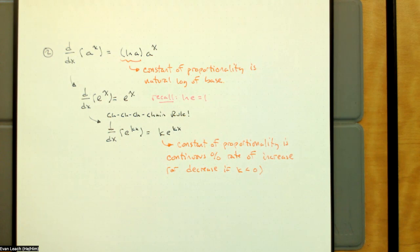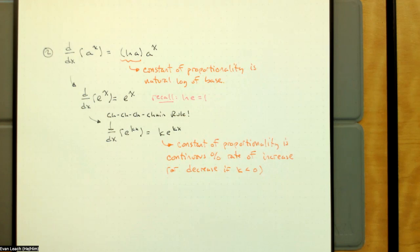I could have just said the derivative of e^(kx) is k·e^(kx), but I think we make a better connection if we tie this to the way we discussed exponential functions before — that the rate of change of an exponential function is proportional to the function itself. So the constant of proportionality is the continuous percent rate of increase, or if it's negative, decrease.